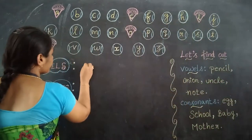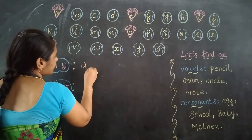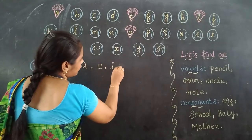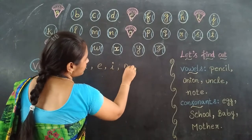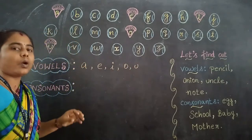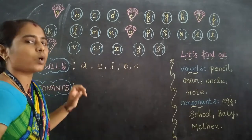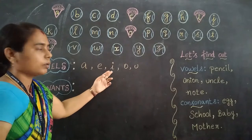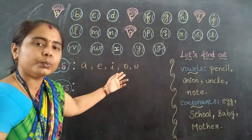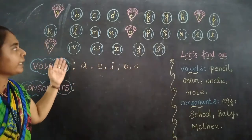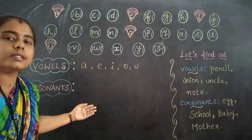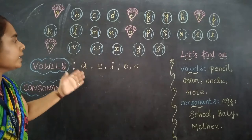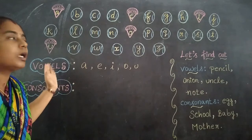What are they? A, E, I, O, U. So we are having five vowels. A, E, I, O, U. And the remaining letters - what are they? The remaining letters are consonants. Absolutely consonants. So other than the vowels are consonants.